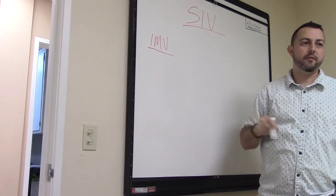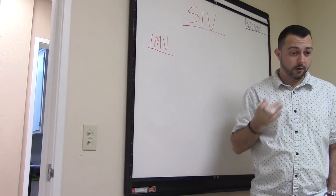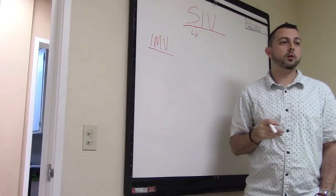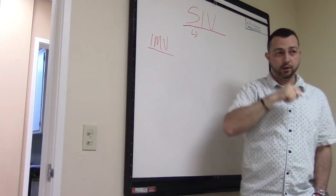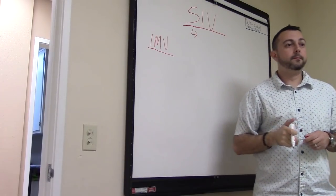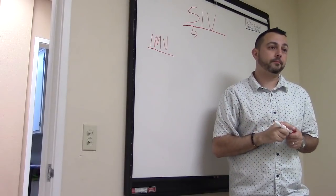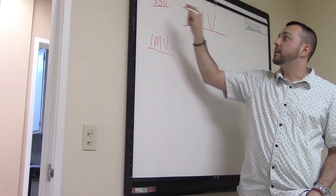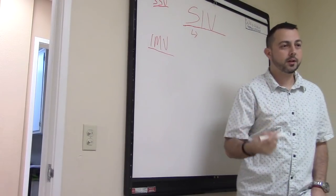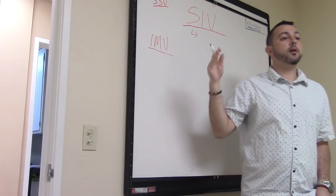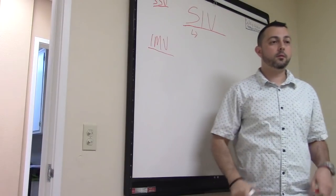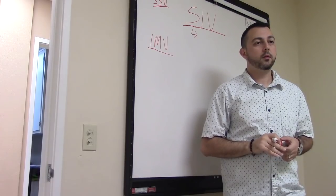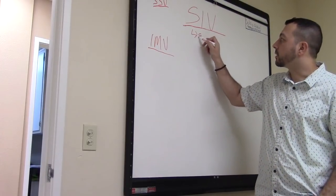At an IMV, they have access to all the vendors and so do you as a CRA. For the SIV, that might not be the case. You need to make sure the site has things like the correct EDC system they'll be using and access to all the vendors.